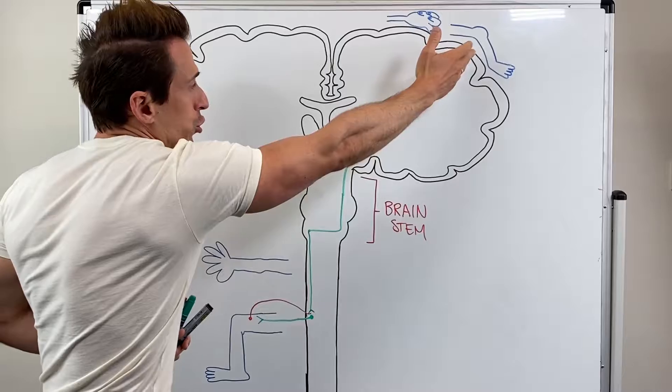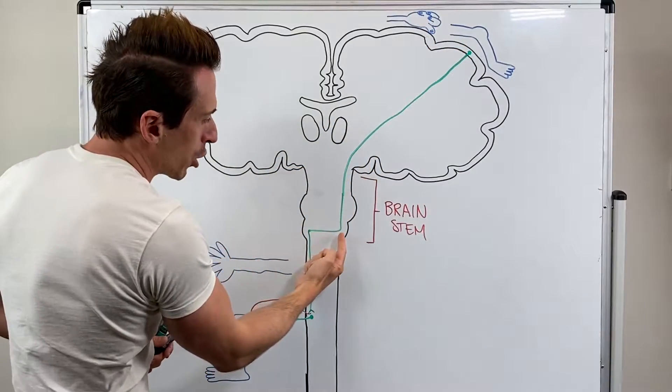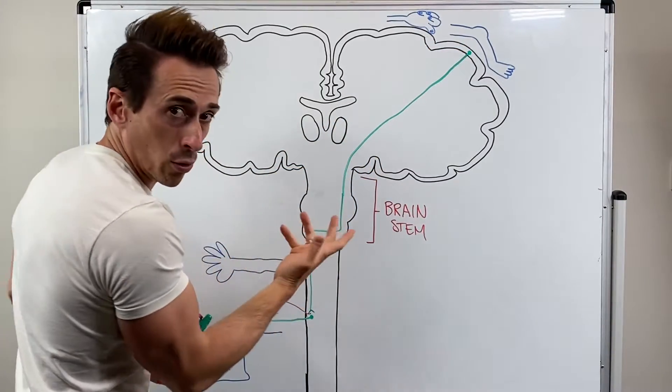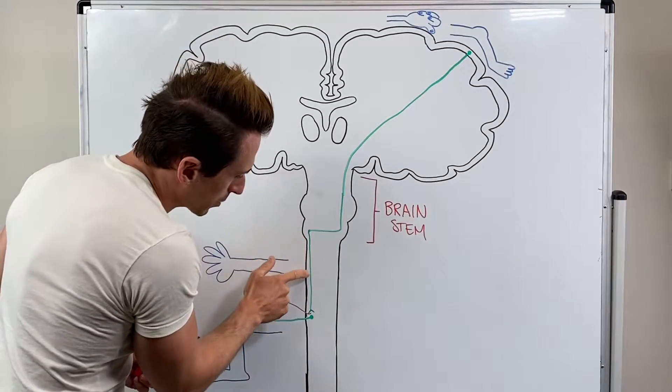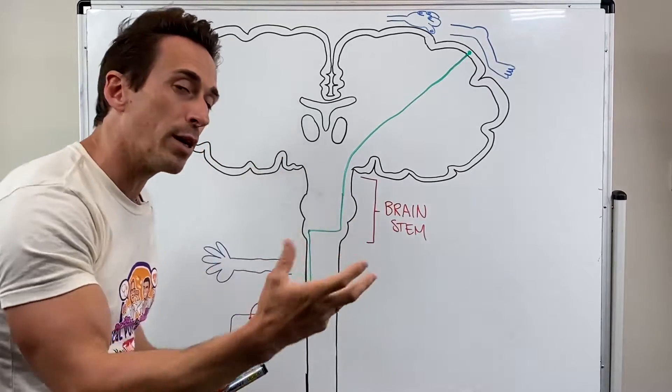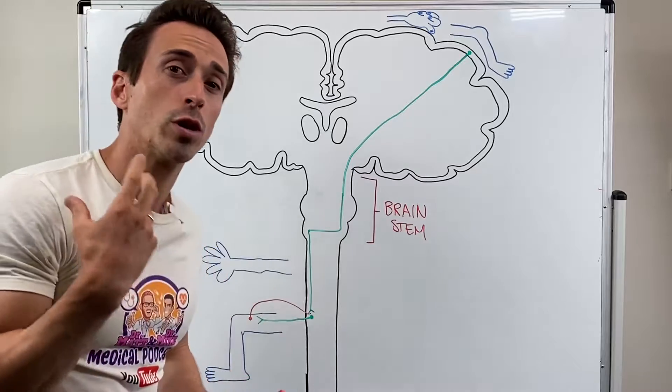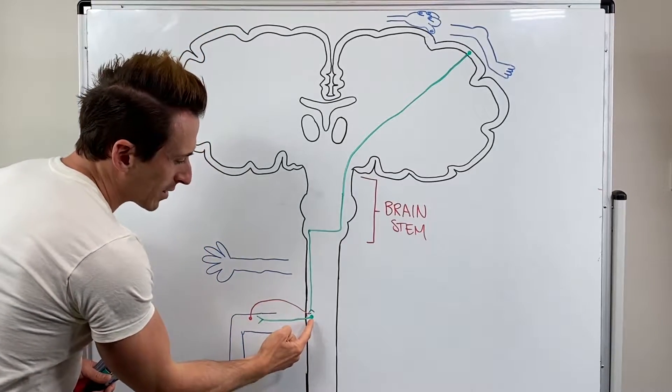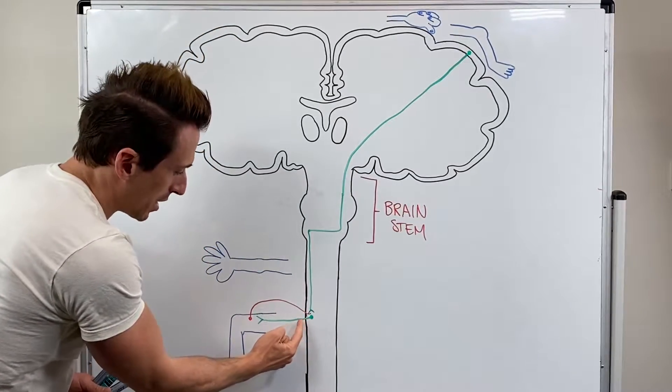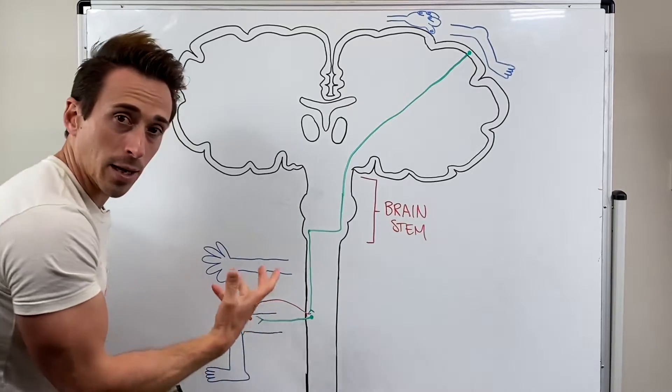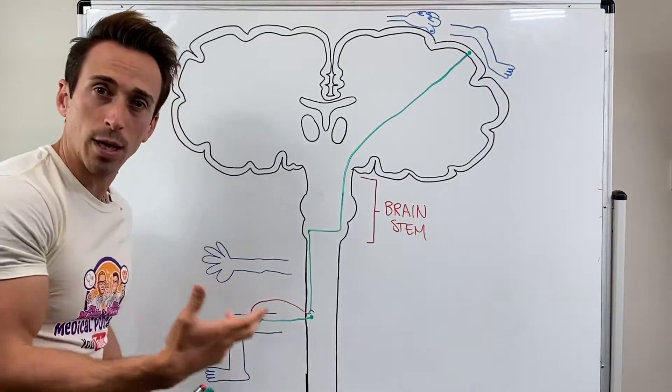This upper motor neuron travels from the cortex to the brainstem, crosses over at the medulla or medulla oblongata, continues down the spinal cord and then synapses or speaks to the second motor neuron called the lower motor neuron which exits at the level in which it needs to innervate or speak to the target muscle. Here we've got the quadricep of the leg.